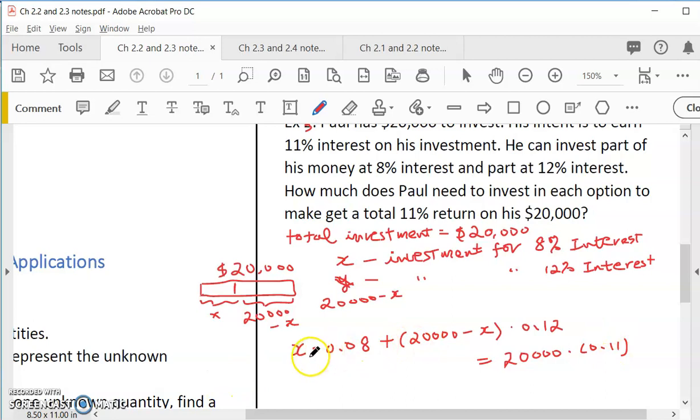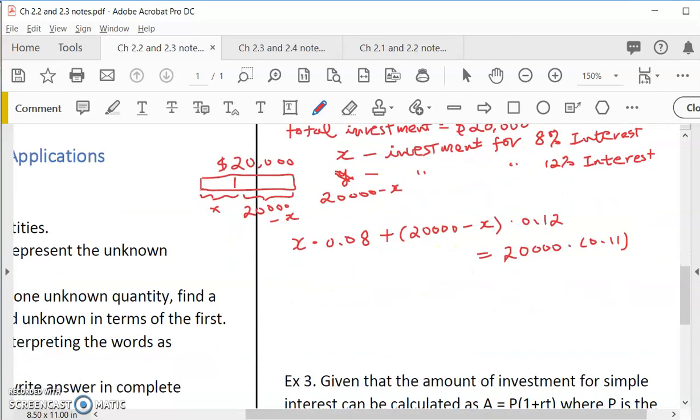Because interest means you have the principal times the rate. So this is our equation. We pretend that we know what amount we have. We multiply by 8%. We pretend to know what the second part is. We multiply by 12%. And it turns out to be what we want. So now let's solve it. So the first part would be to remove the grouping symbol. So this would be 0.08x plus 0.12 times 20,000 would be 2400 minus 0.12x. And then this would be 2200.